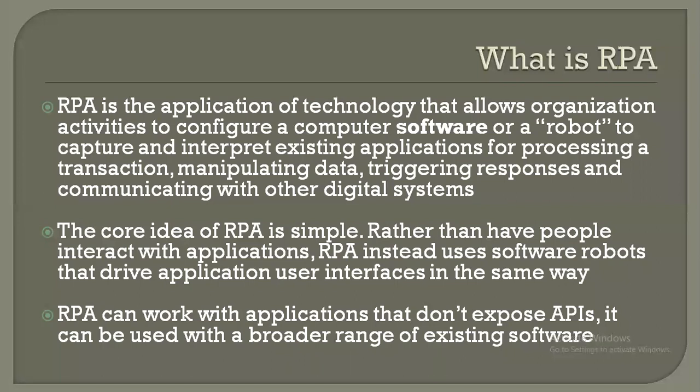So what is RPA? RPA is a software robot wherein it mimics human interactions by incorporating all the activities in a process to process transactions, manipulating data, triggering responses, and communicating with other systems. The core idea of RPA is very simple — rather than having people interact with applications, RPA uses software robots that drive the application user interface in the same way. RPA can work with applications even if they don't have an API exposed.